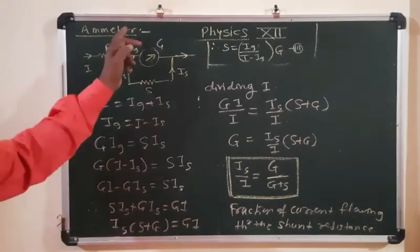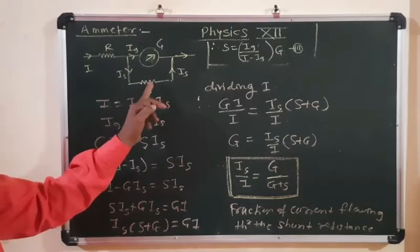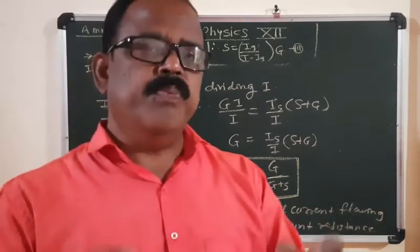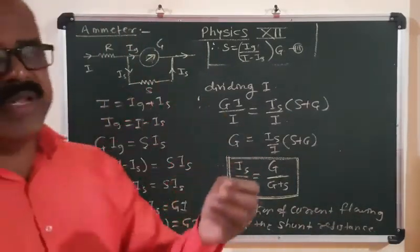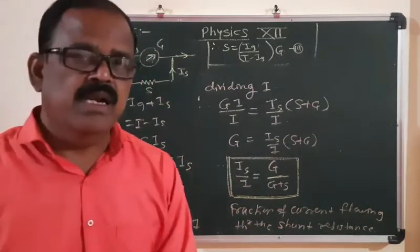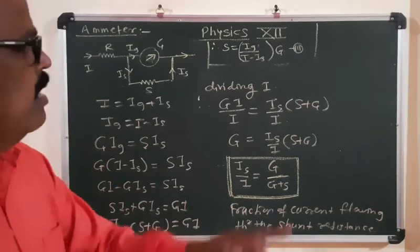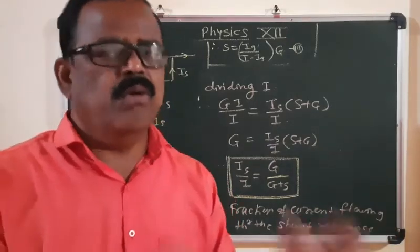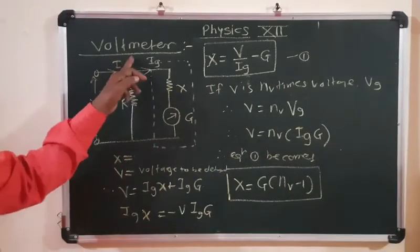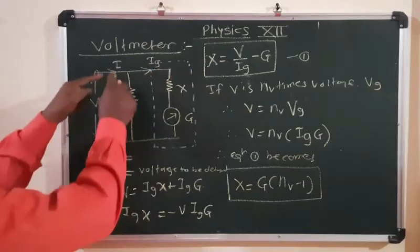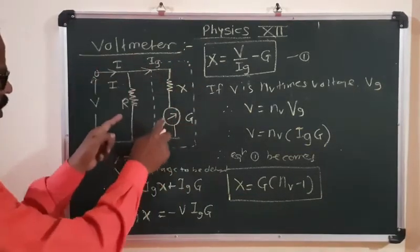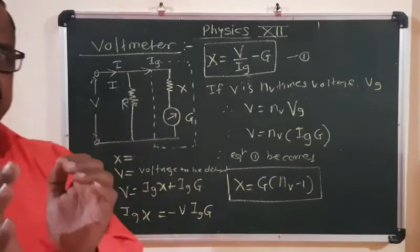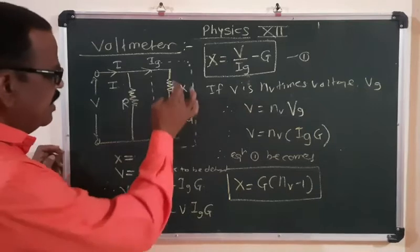To convert a galvanometer into an ammeter, a shunt resistance is connected in parallel with the galvanometer coil. This shunt resistance increases the range of the ammeter, protects it, and also minimizes the resistance at the point to which it is connected. Now we explain how to convert the galvanometer into a voltmeter.